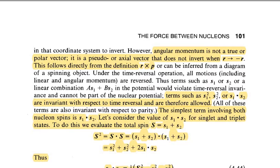However, the angular momentum is not a true or polar vector. This is a pseudo or axial vector that does not invert when r → -r. This follows directly from the definition of r cross p.